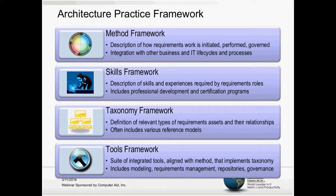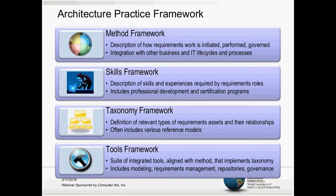Enterprise architecture is really a business capability, and capabilities are composed of three chunks: process, people, and tools. We need a tooling framework to support that, aligned with the method and implementing the taxonomy. Our experience shows this is a suite of integrated tools. While modeling tools are often an entry point, there's a broad range of tools to consider as you mature your architecture capability — particularly around requirements management, repository management, and governance management.